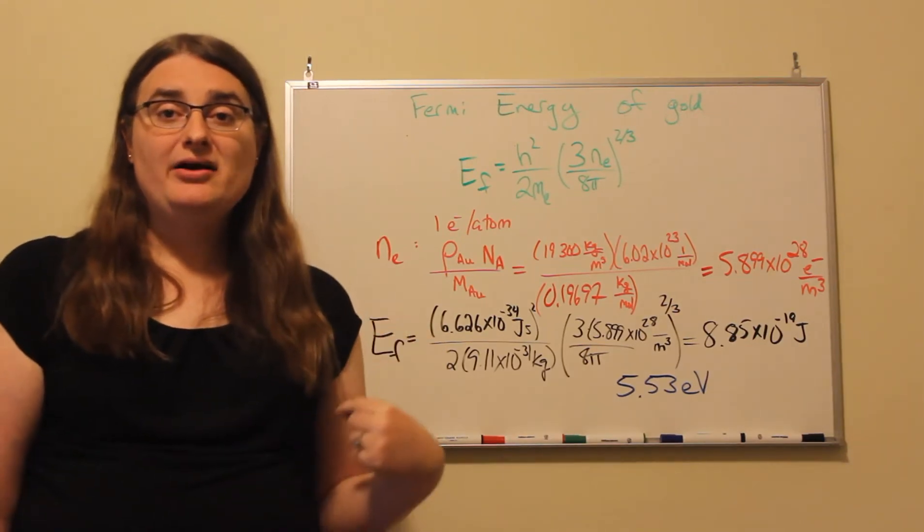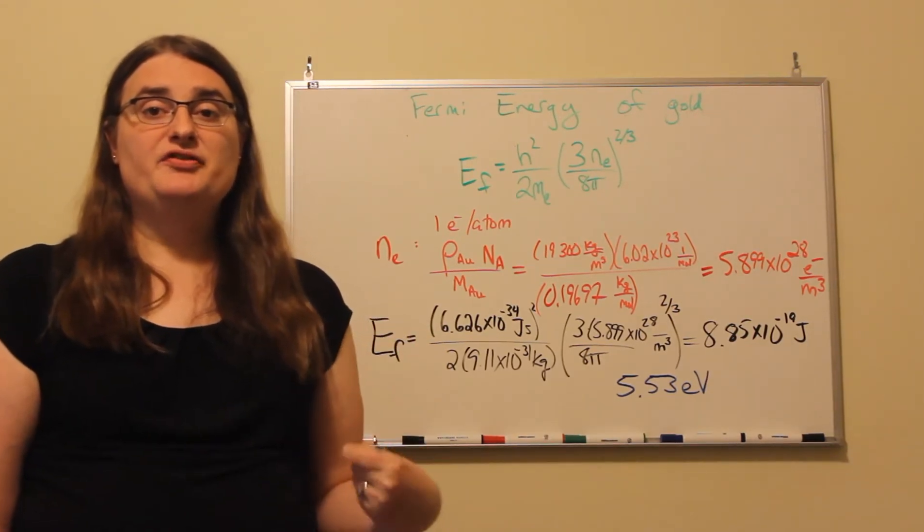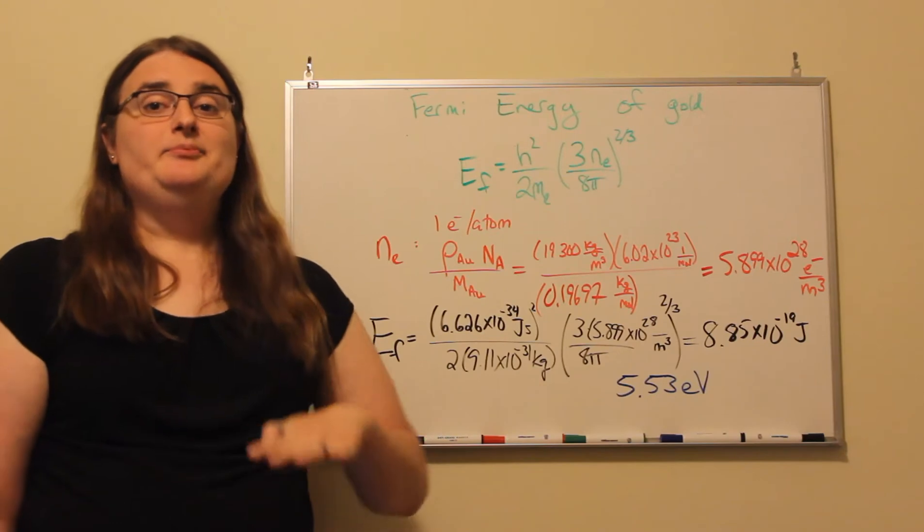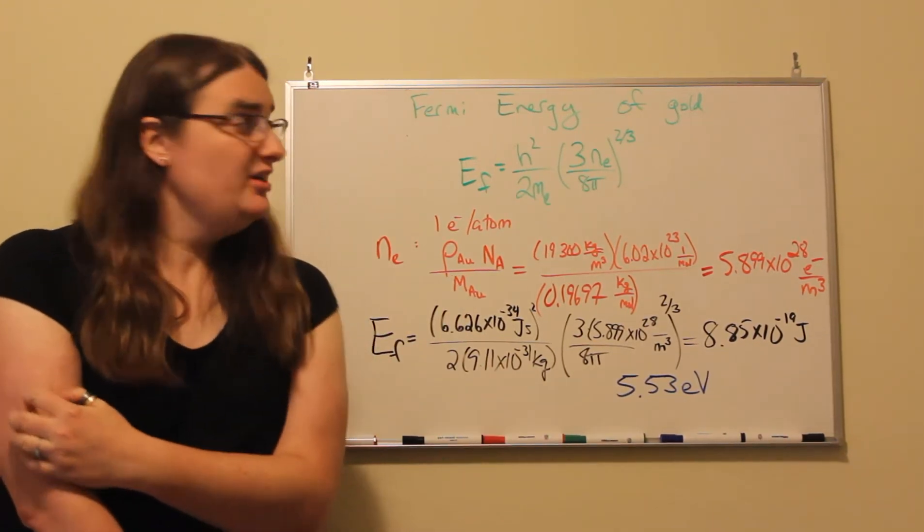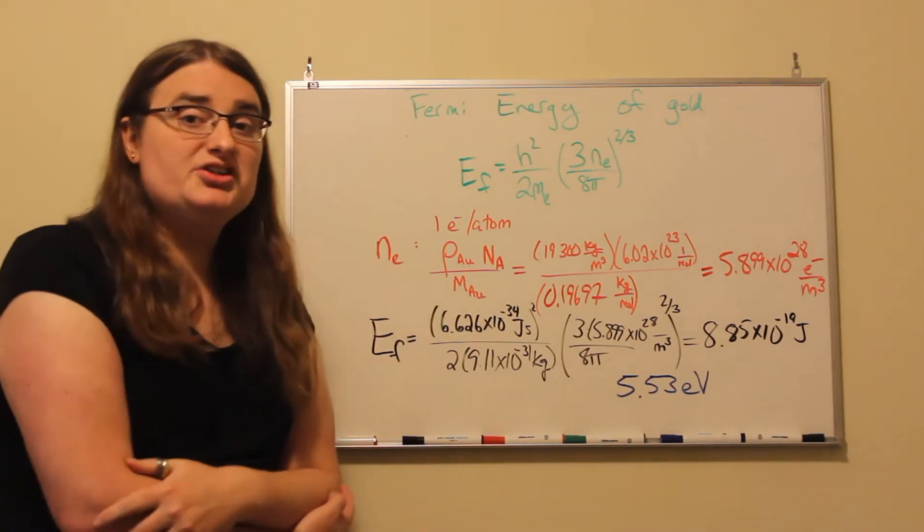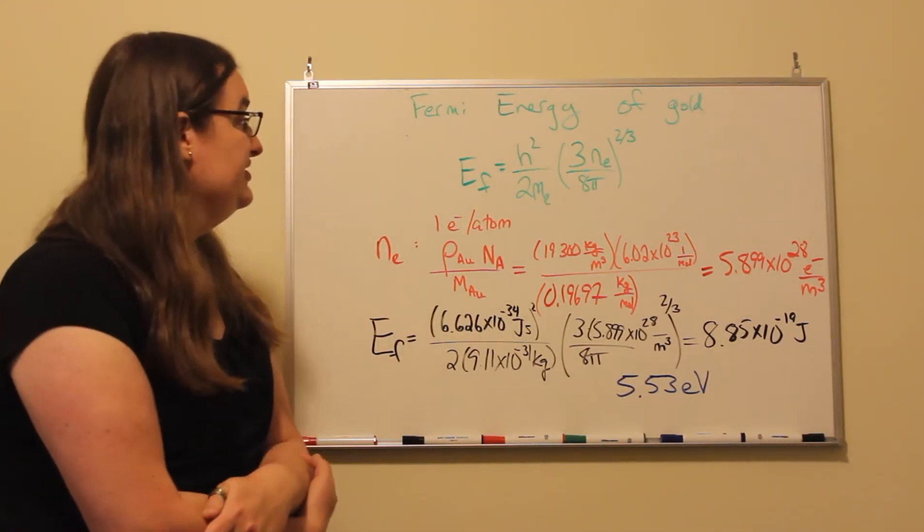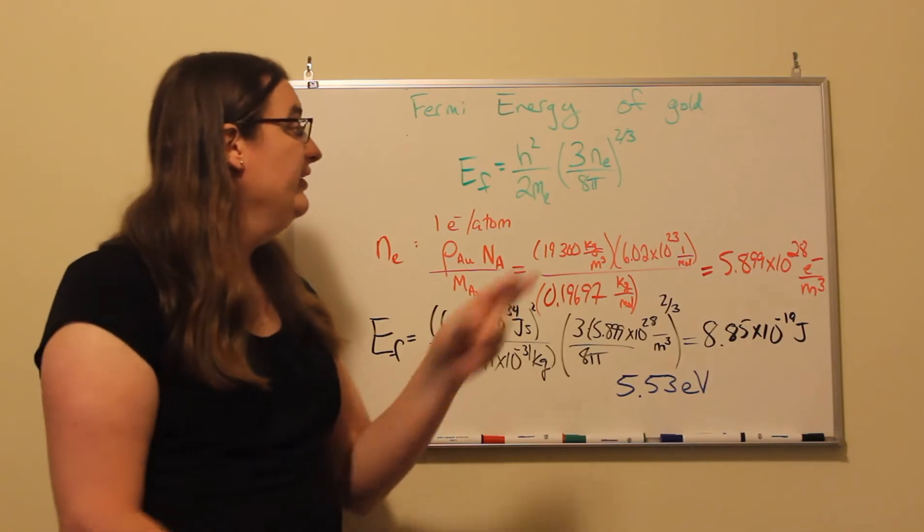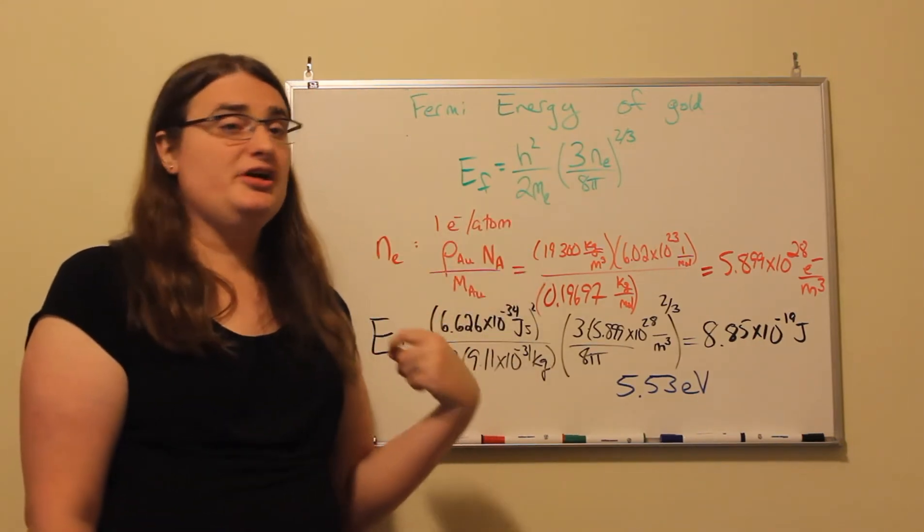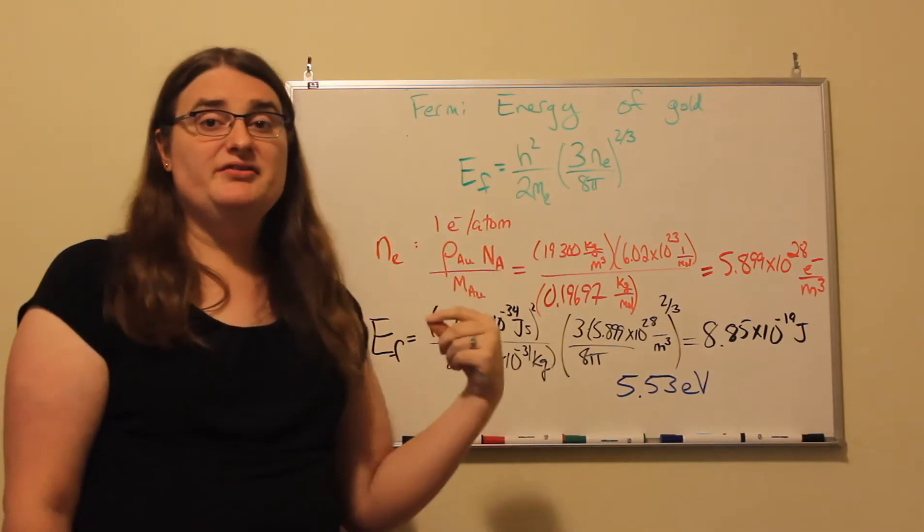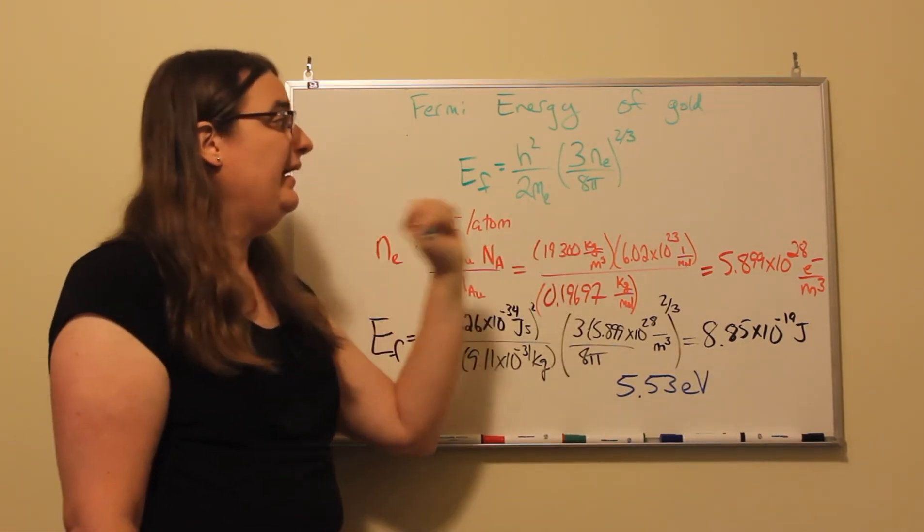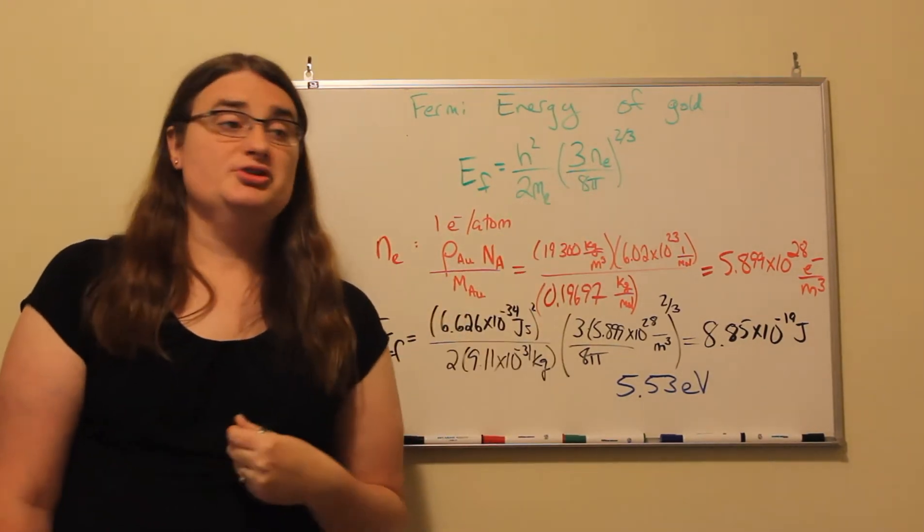And we can calculate the energy of the Fermi level, that lowest open state energy available to electrons for conduction, using the equation: the Fermi energy is equal to Planck's constant squared divided by two times the electron mass times the quantity three times the number density of electrons divided by eight pi raised to the two-thirds power.